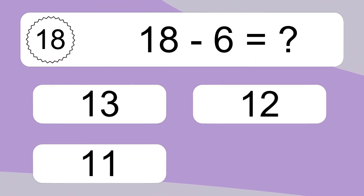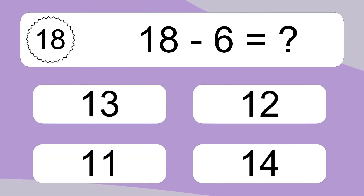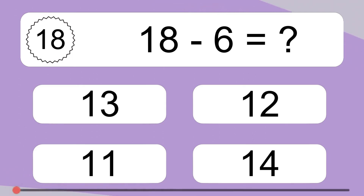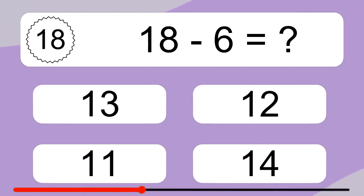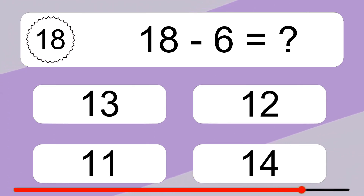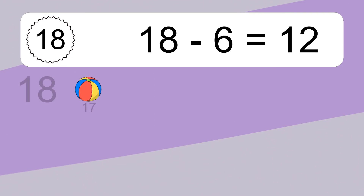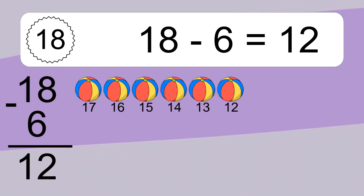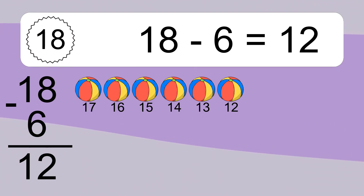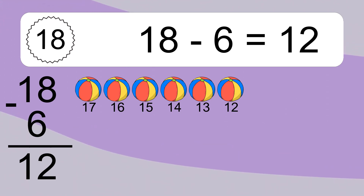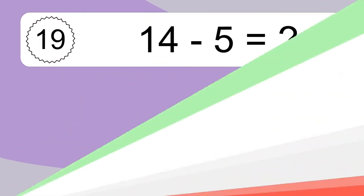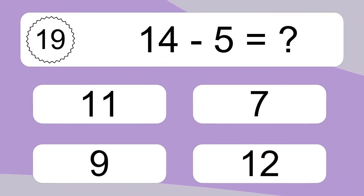18 minus 6 equals what? 18 minus 6 equals 12. Let's count it. 17, 16, 15, 14, 13, 12.